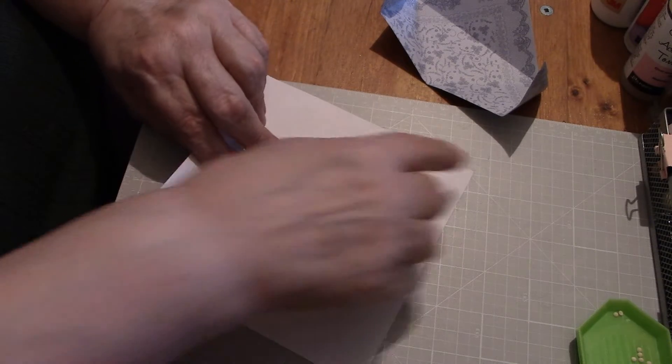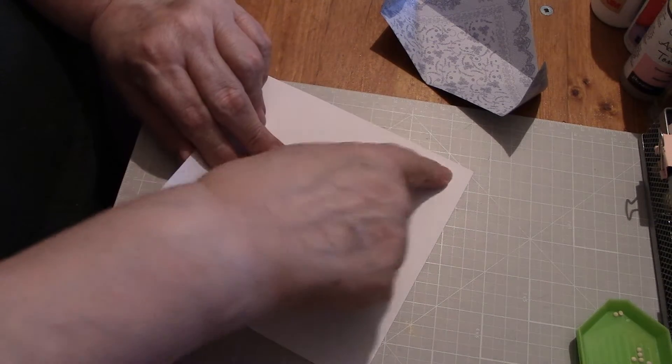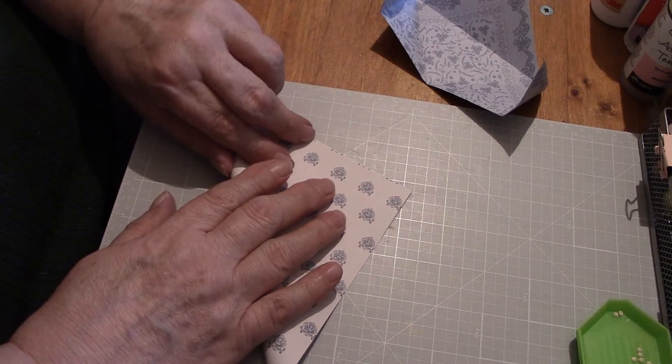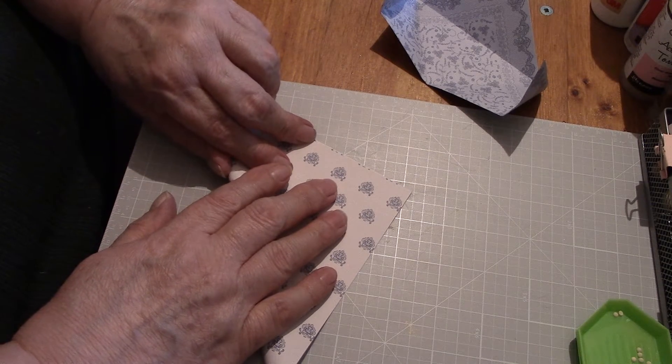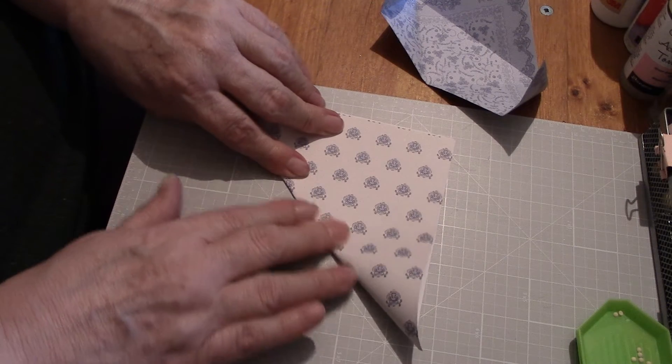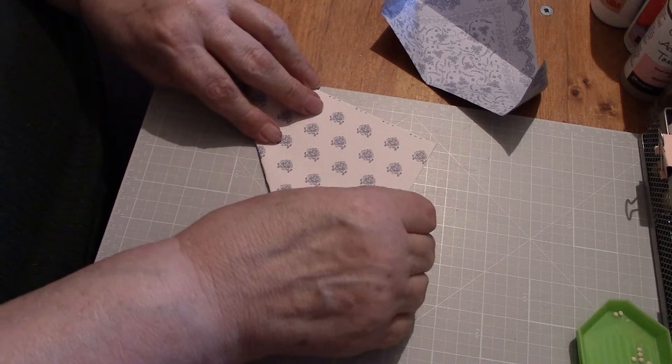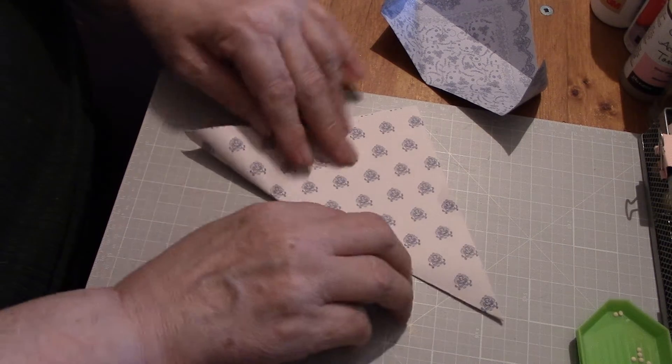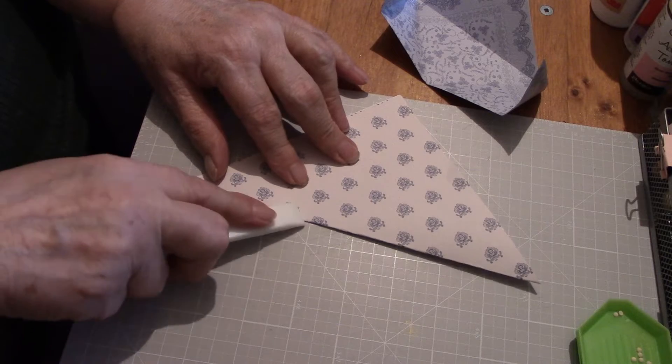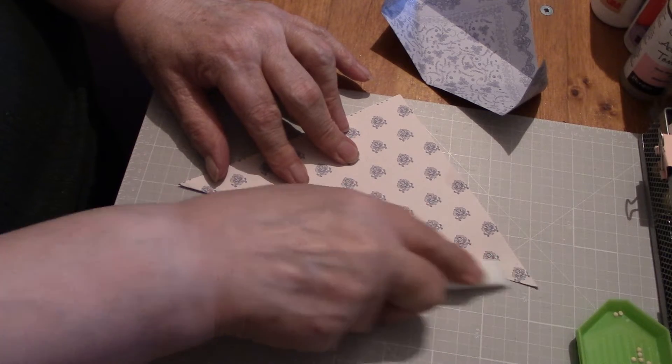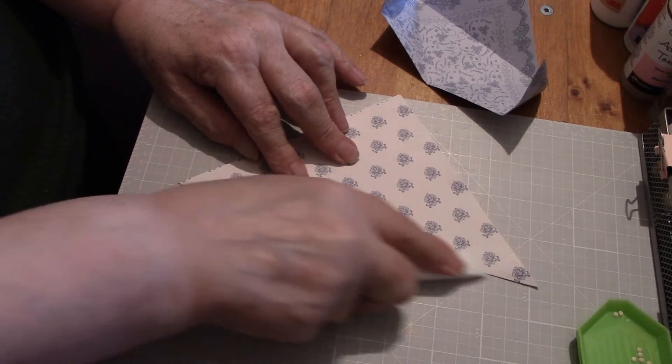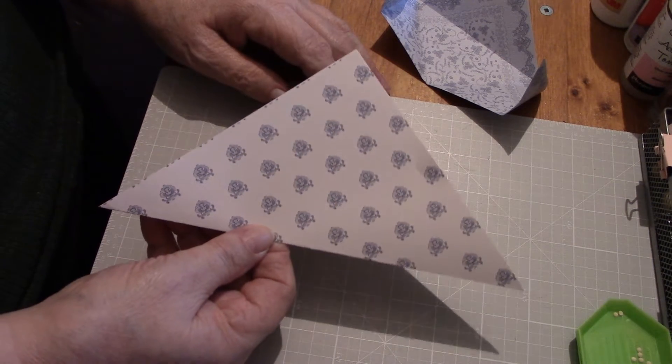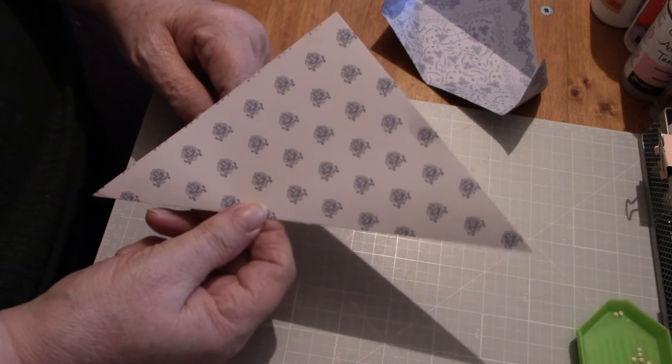You just fold diagonal to diagonal here, pointy end to pointy end, fold it in half and use your bone folder to get that pushed down nicely. So all you've done is just folded it in half to make a half a triangle here.